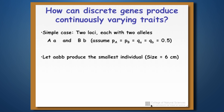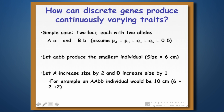Let's specify that an individual with all lowercase alleles — little a, little a, little b, little b — produces the smallest possible individual, which we'll say is six centimeters in size. Then for every capital A in the genotype, that increases the size of the individual by two centimeters. And for every capital B in the genotype, we increase the size by one centimeter.